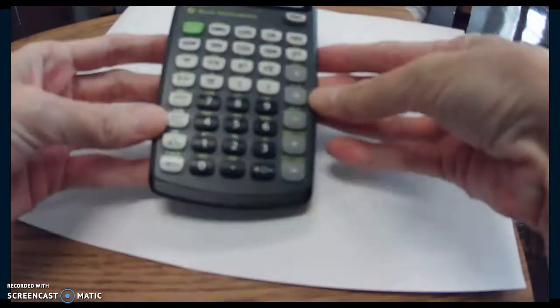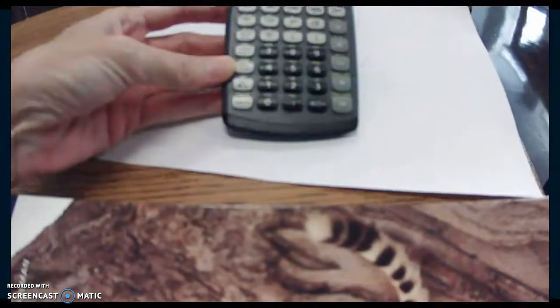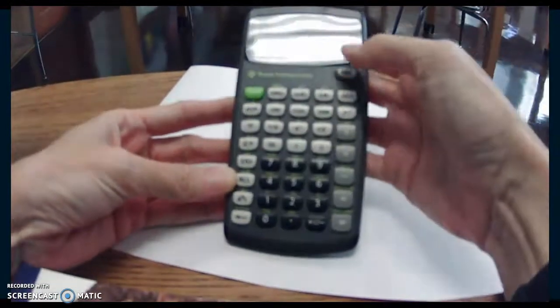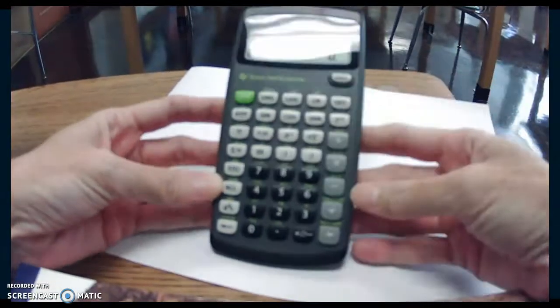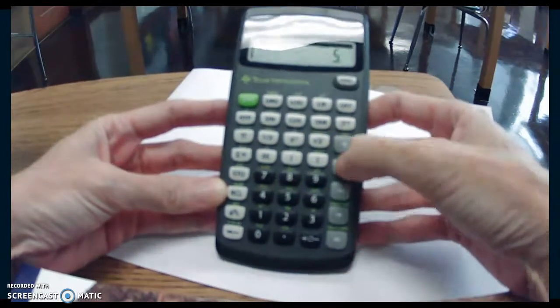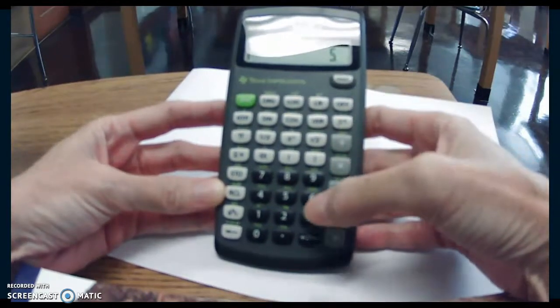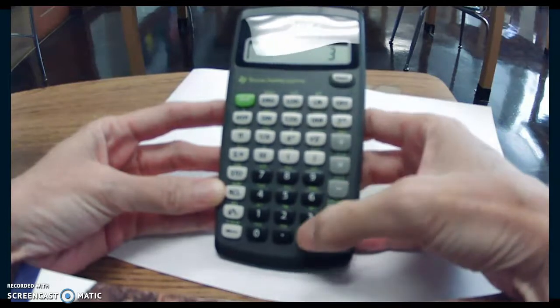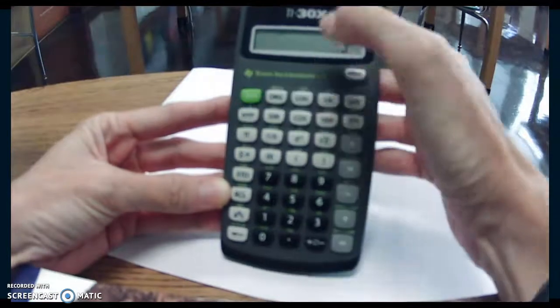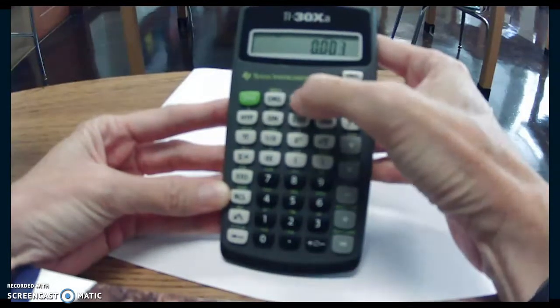Once again, I'm going to clear my number. I'm going to take 5, and now we want to multiply by 10 to the minus 3. So again, we're going to hit 3 and then change it into a negative, and then second function, and then my 10 to the x button.